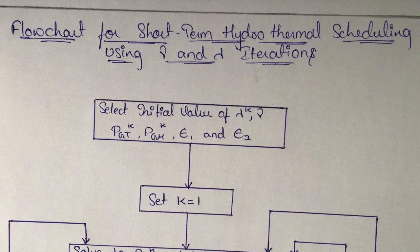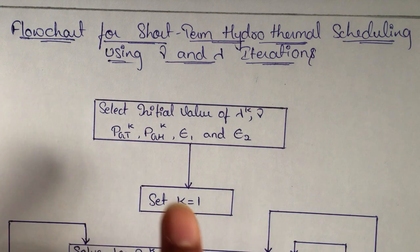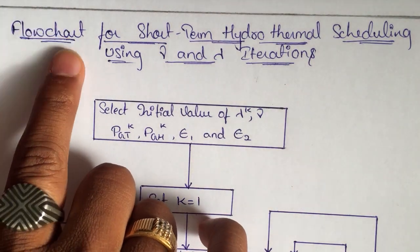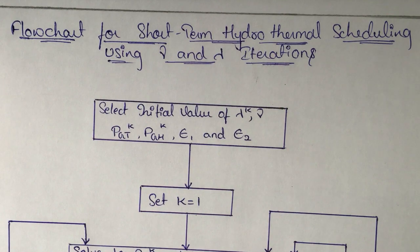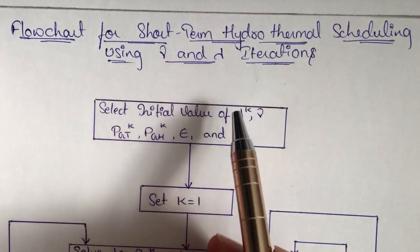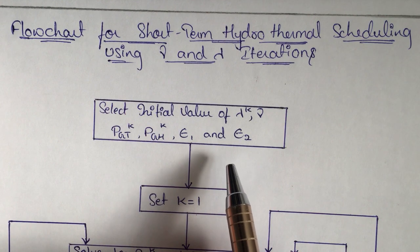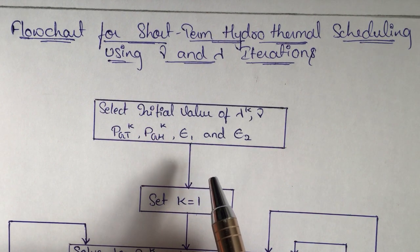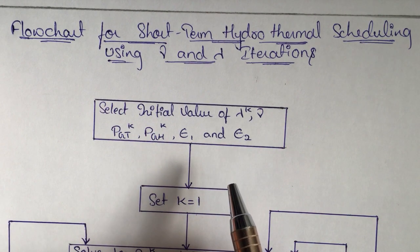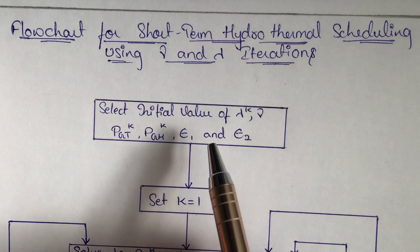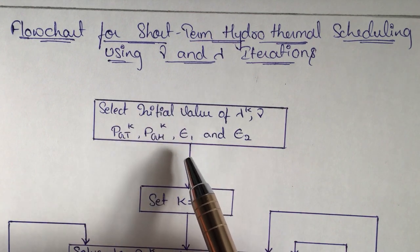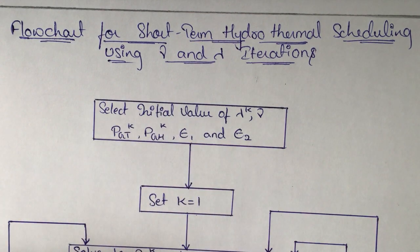Hello everyone. In this video we are going to discuss the flowchart for short-term hydrothermal scheduling using gamma and lambda iteration. In the previous videos we discussed the short-term hydrothermal scheduling using gamma and lambda iterations, and after that the algorithm for the same. Now we are going for the flowchart.